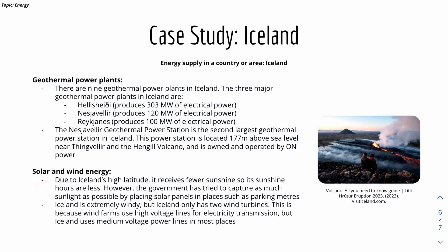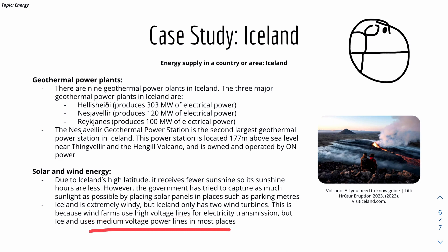Due to Iceland's high latitude — located between Greenland and America, quite far north — it receives fewer sunshine hours, so solar energy isn't used widely. However, the government has tried to capture as much sunlight as possible by placing solar panels on things like parking meters to maximize available sunshine. Iceland is extremely windy because it's an island, but it only has 2 wind turbines because wind farms require high voltage transmission lines, while Iceland mostly uses medium voltage power lines, making them unsuitable.